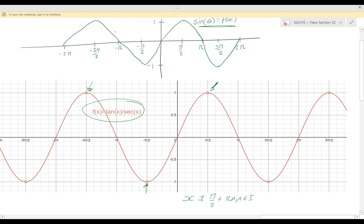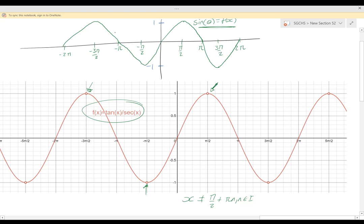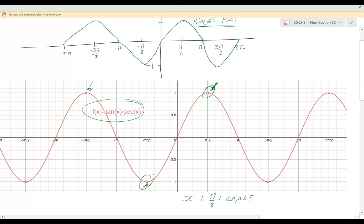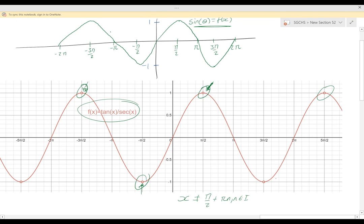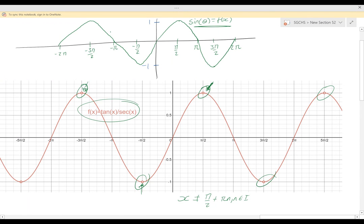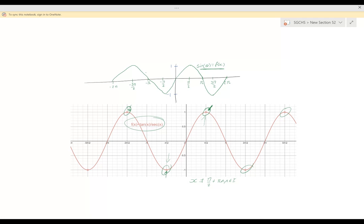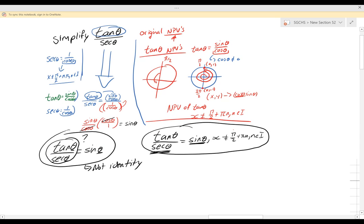you might go, 'Well, they're the exact same graph, so they must be an identity.' But that's not quite true. Because what you're going to notice is these have holes that we cannot see. Since I used a different type of technology that does show us the holes, but on a graphing calculator these won't pop up. So you're going to say, 'Well, they're the exact same graph, they should be the same,' but they are not. And that's why it is really important to understand and know how to solve it using identities and find those non-permissible values, so we can determine if in fact they are a true identity or only identities for certain values of x.